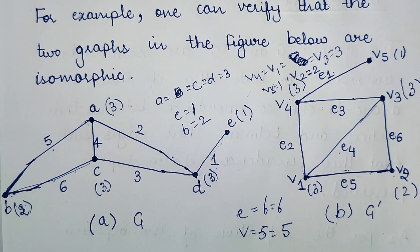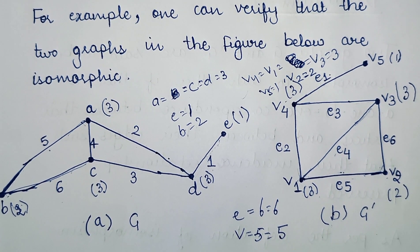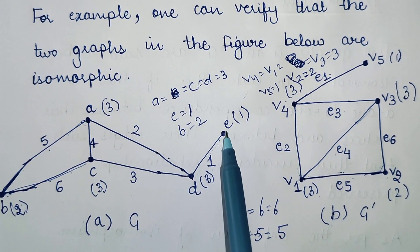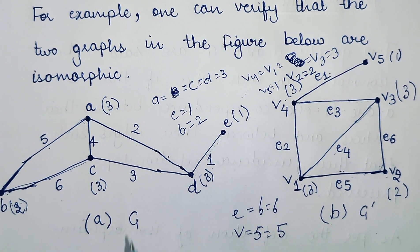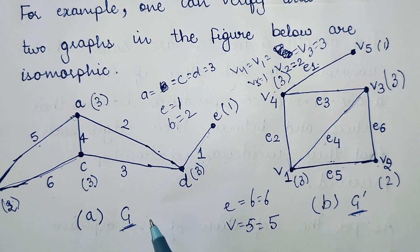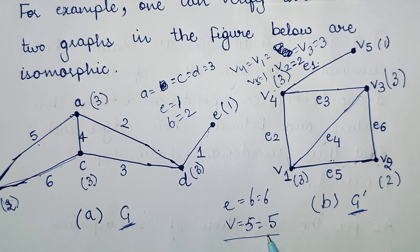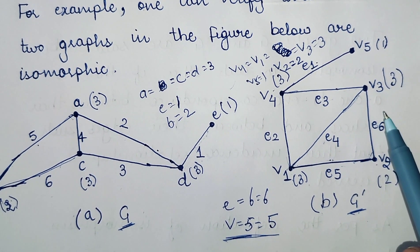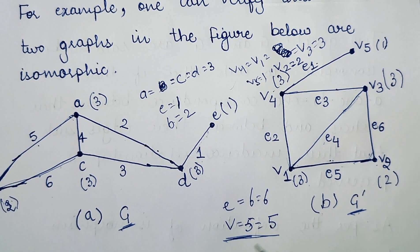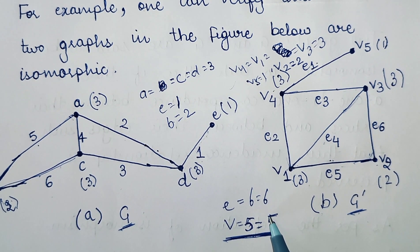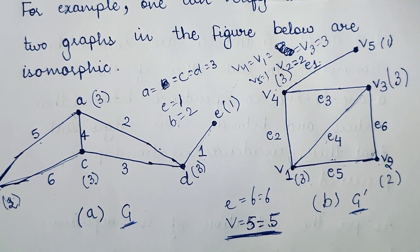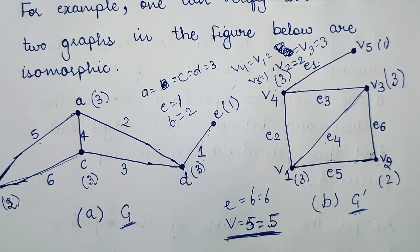Now let's check all three properties required for an isomorphic graph. First, the number of vertices should be the same in both graphs. Graph G has exactly 5 vertices. Graph G-hash also has exactly 5 vertices. So the number of vertices in both graphs G and G-hash is equal to 5, and the first property is satisfied.